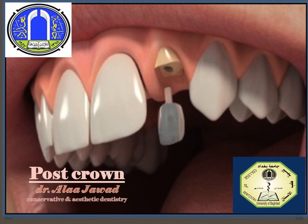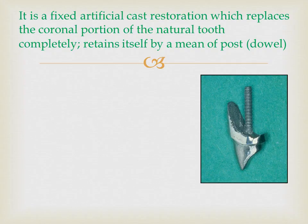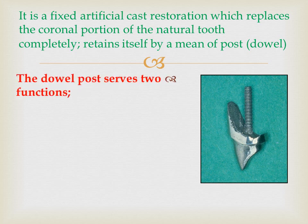Our lecture today is about post crown. A post crown is a fixed artificial cast restoration which replaces the coronal portion of the natural tooth completely. It retains itself by means of a post or dowel.